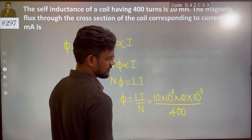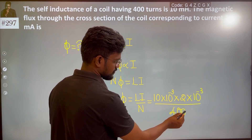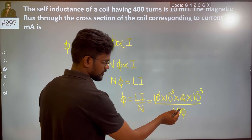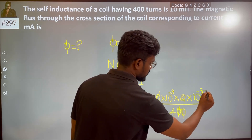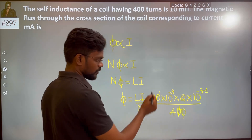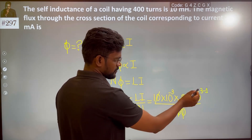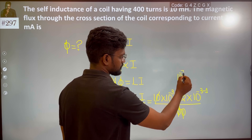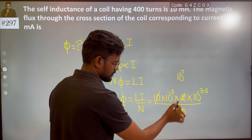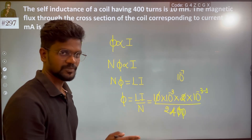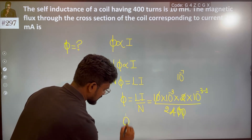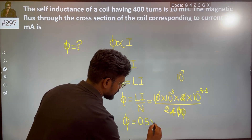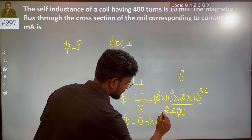Now simplifying: we cancel zeros — 10⁻³ × 10⁻³ gives 10⁻⁶, divided by 400. That gives 10⁻⁶ / 400. One by two is 0.5, so the result is 0.5 × 10⁻⁷.